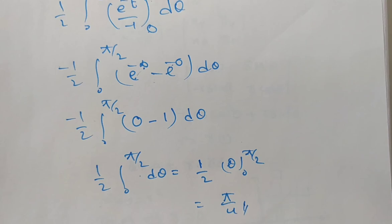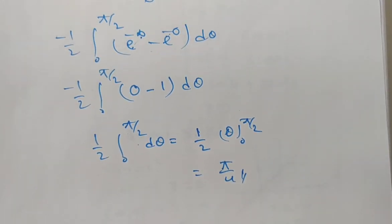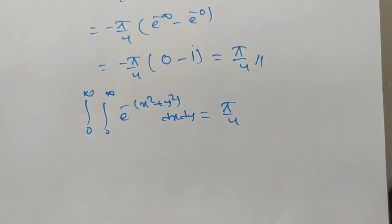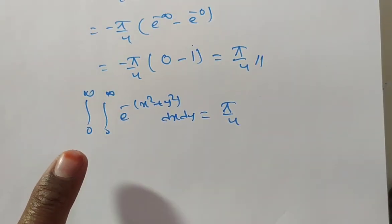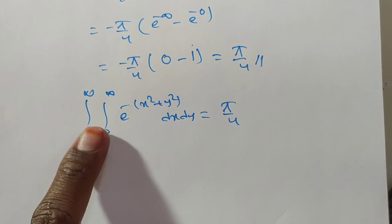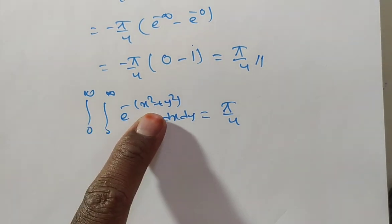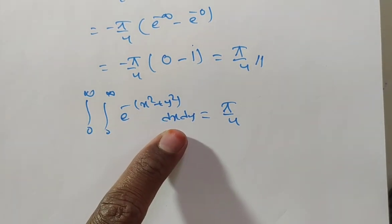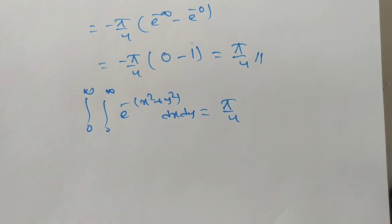So both methods give pi by 4. Hence, the integral from 0 to infinity, integral from 0 to infinity of e to the power of minus x squared plus y squared dx dy equals pi by 4.